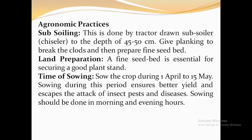Next are agronomic practices. Subsoiling is done using a TK3 subsoiler to a depth of 45 to 50 cm, since cotton has deep roots. Then give blanking to break the clods and prepare a fine seedbed. A fine seedbed ensures a good plant stand.